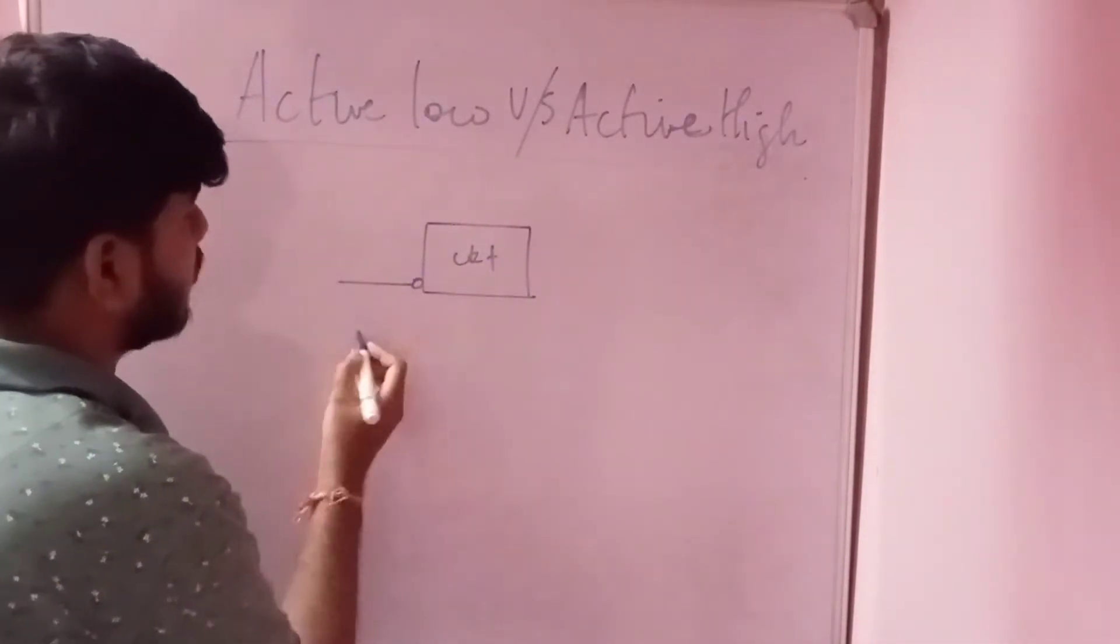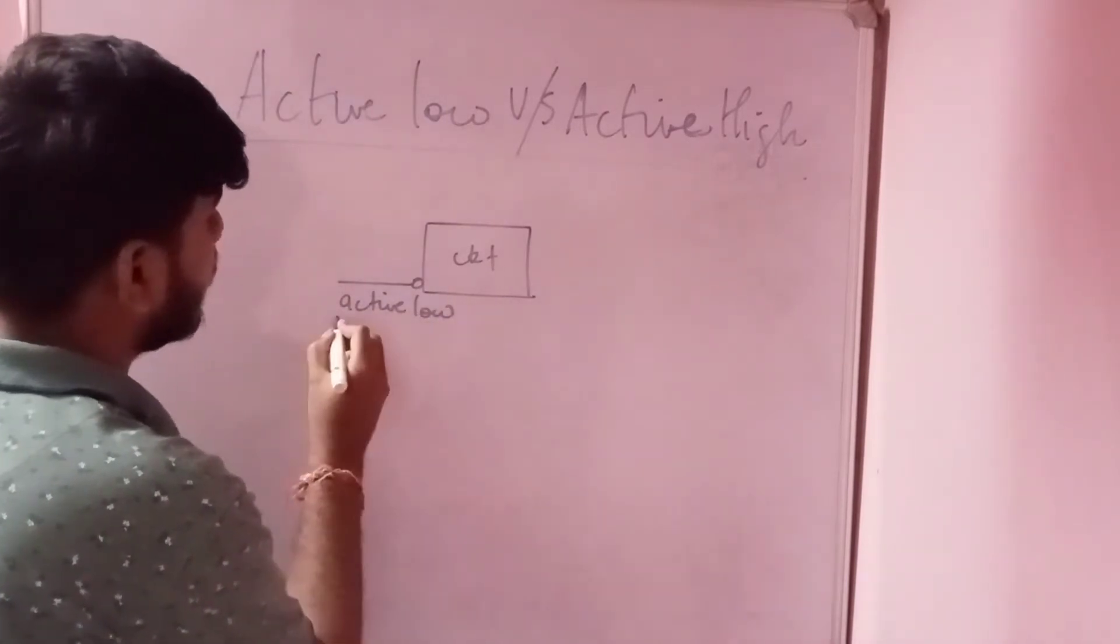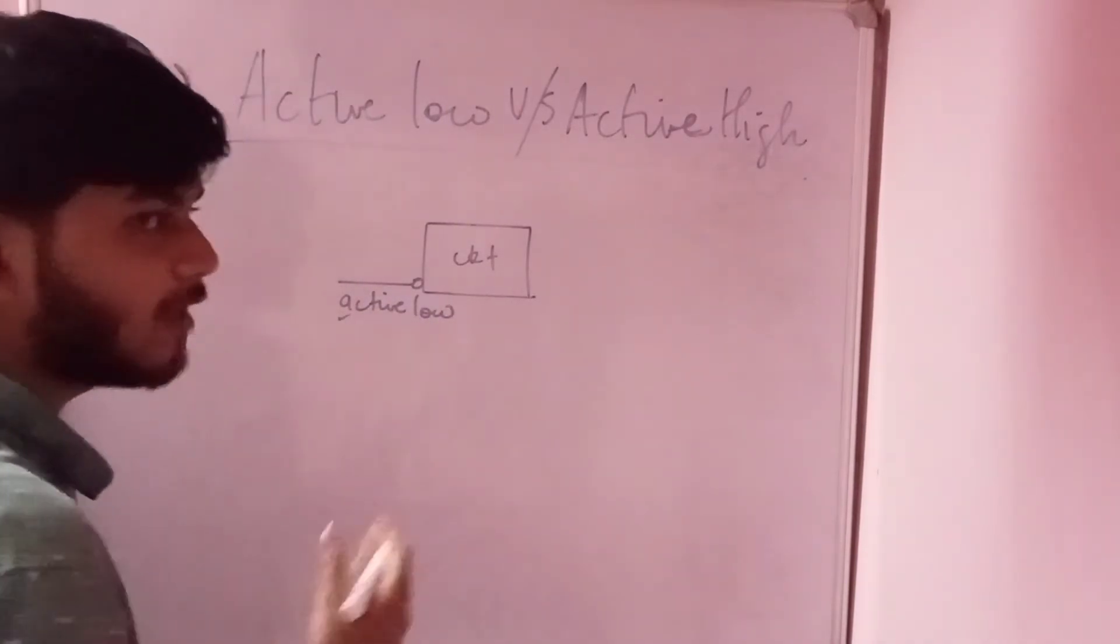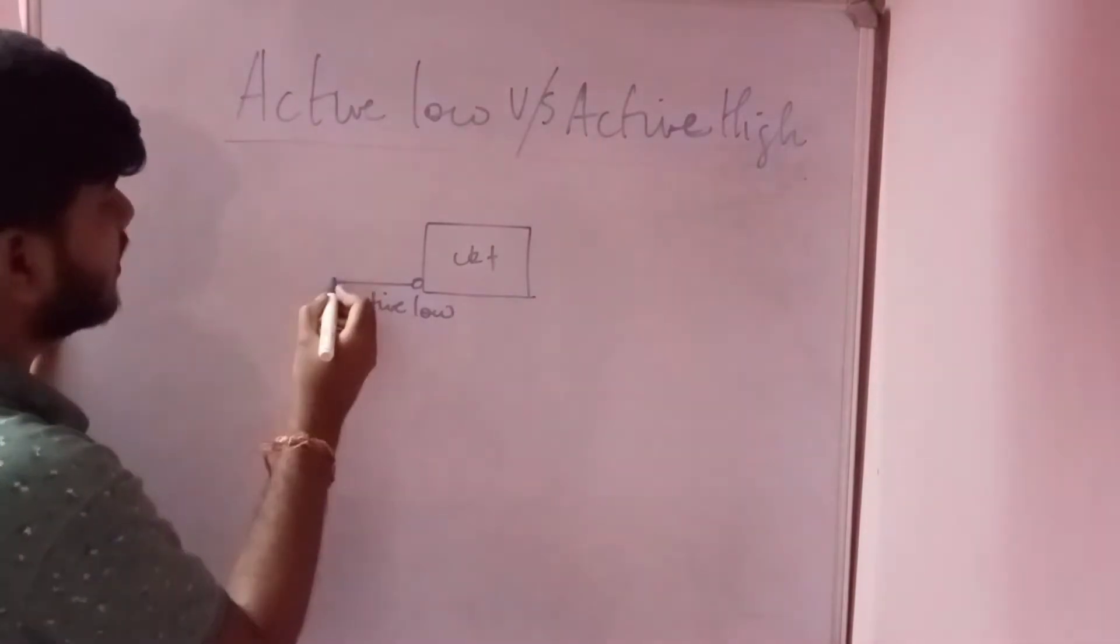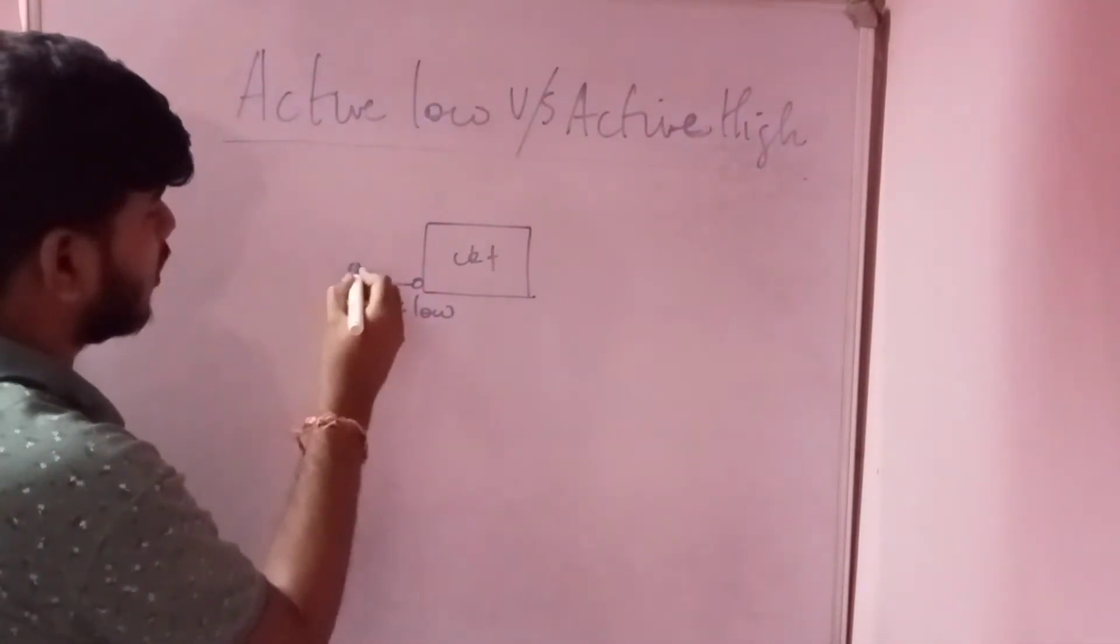For example, you have an active low signal, this is an active low signal. Now what do you understand by active low signal? Active low signal is nothing but when we connect a low signal here, for example we have a zero, a logic zero here.